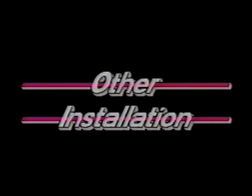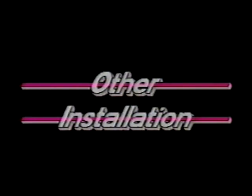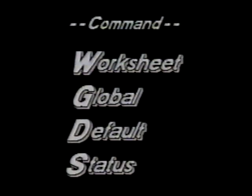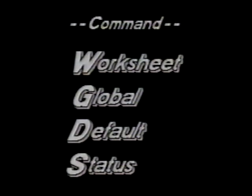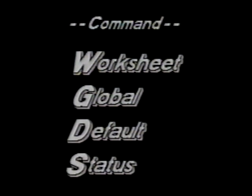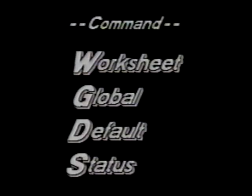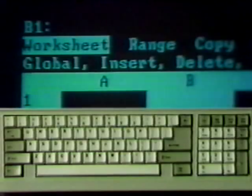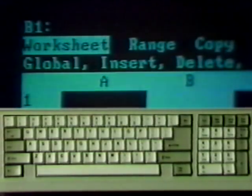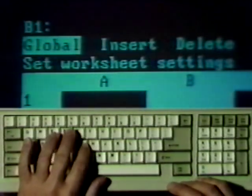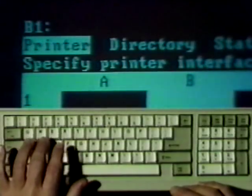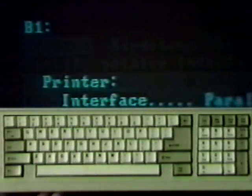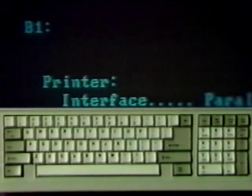We have a couple of other things to do at this time. The default printer setting should be checked. Use the worksheet global default status command. Press the forward slash key to get the main command menu. Then type W, G, D, and S. Only the first letter of each word in the command is needed. The current printer settings are displayed.